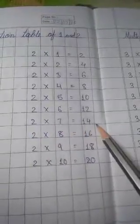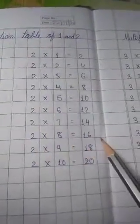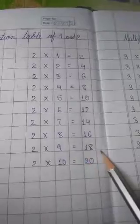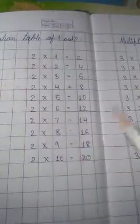2×6 is 12. 2×7 is 14. 2×8 is 16. 2×9 is 18. 2×10 is 20. So, you will be reading in this way at your home.